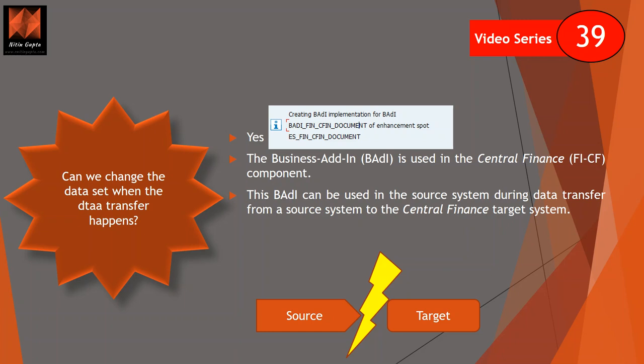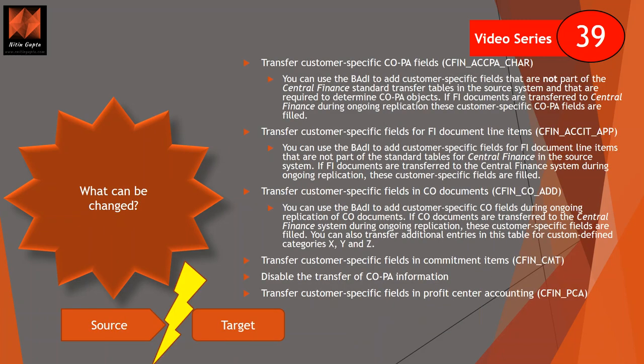So basically, in the middle of the transfer, you can change the data set. The question is what can we change — that is very important to understand. Copa is a very flexible and customer-specific area, so Copa always has variation with each customer implementation, and you have the option to change Copa fields.